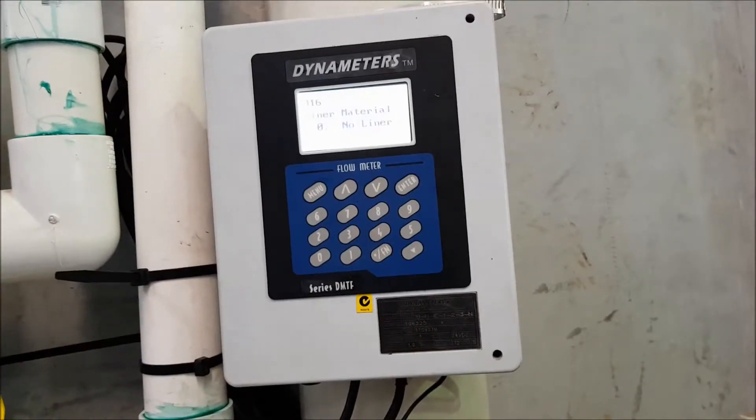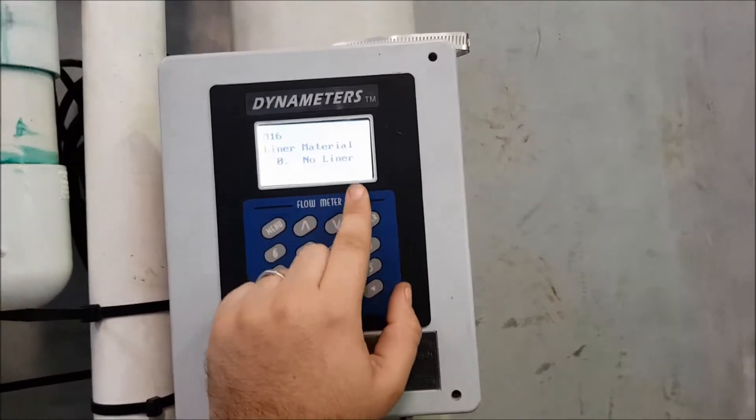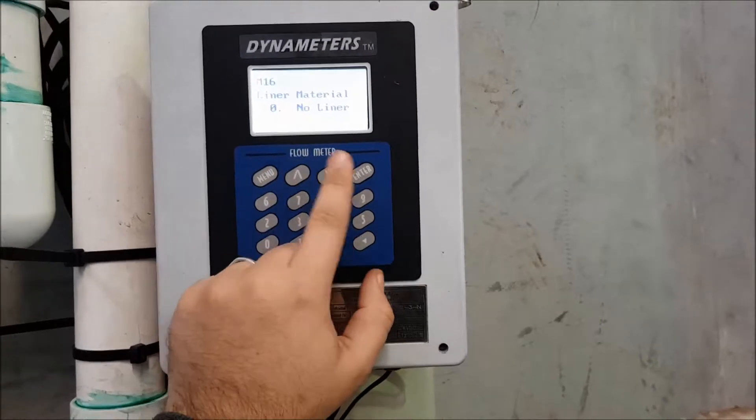Now, liner, if you have a liner in your pipe, you'll also need to enter it here. But in this case, there's no liner, so I'll select no liner.